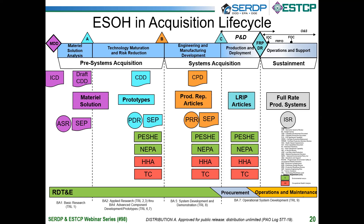As the program starts, it begins with research, development, technology, and evaluation funds, which begin with basic research and mature through the various budget activities to system development and demonstration. As the program becomes more mature and approaches the full rate decision review, the RDT&E funds wind down and the procurement funds begin. And eventually, once the item is fully deployed, the funding transitions to operations and maintenance.